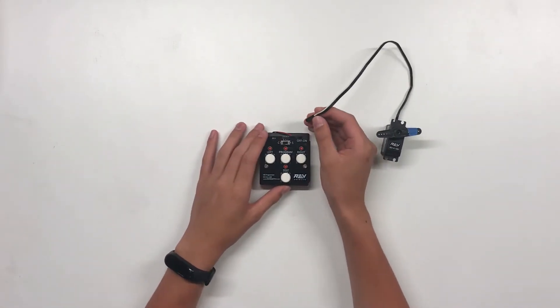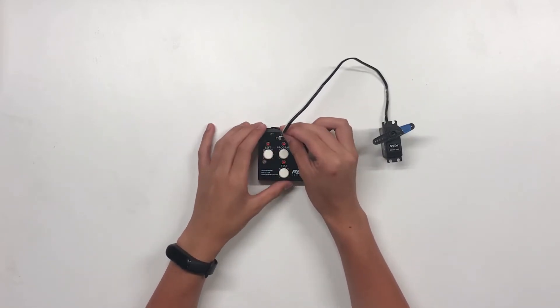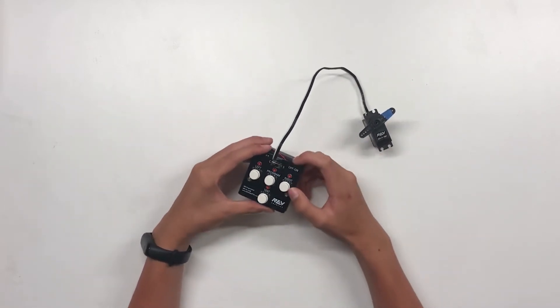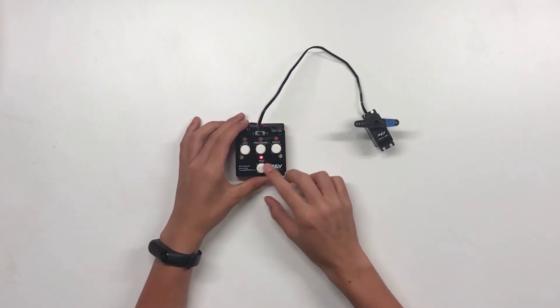First, plug in the servo wire to the top of the servo programmer, making sure that the white wire is on the left side. Make sure that the servo programmer is turned on and that the switch is in the S position, and then hit the test button.